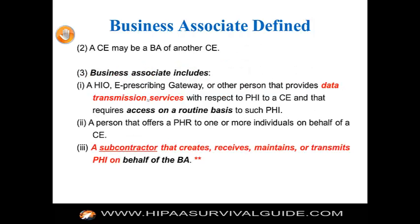A covered entity may be a business associate of another covered entity. Business associates include — right out of the HITECH Act — health information organizations, e-prescribing gateways, or other persons or entities that provide data transmission services with respect to PHI to a covered entity or a business associate and that require access on a routine basis to such PHI. These organizations, which I'd characterize as interoperability organizations, are BAs by definition because the HITECH Act specifies them as BAs.